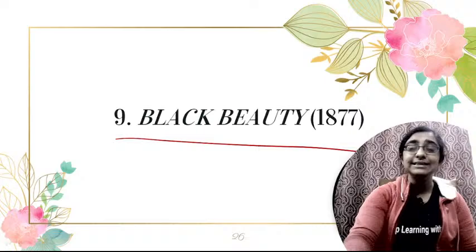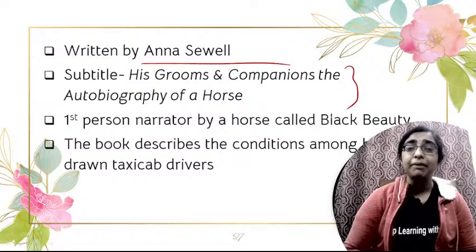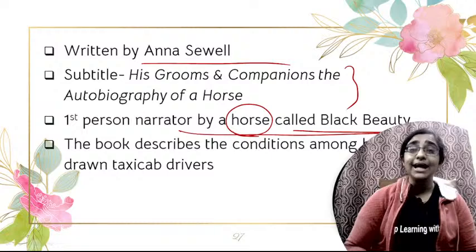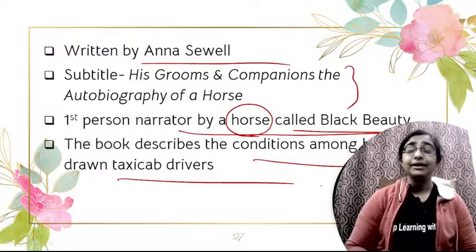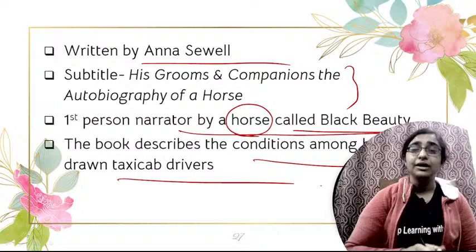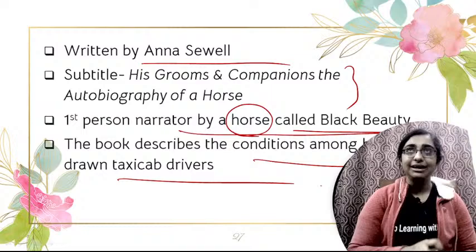Next is Black Beauty, published in 1877, a novel by Anna Sewell. It is a lesser-known novel with a notable subtitle: His Grooms and Companions: The Autobiography of a Horse. It features a first-person narration by a horse. In this novel, the horse is the narrator. The book describes the conditions among horse-drawn taxi cab drivers — the lifestyle of drivers and the experiences of the horses pulling those cabs. This is a very interesting narrative structure.